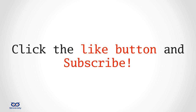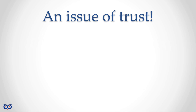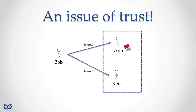If you haven't subscribed, please subscribe. Now let's jump into the material. We're talking about digital identity and the issue of trust. Imagine there's Bob, Ann, and Ken — three individuals. Bob is friends with Ann, Bob is also friends with Ken, but Ken and Ann do not have a relationship. They don't know each other; they're strangers.